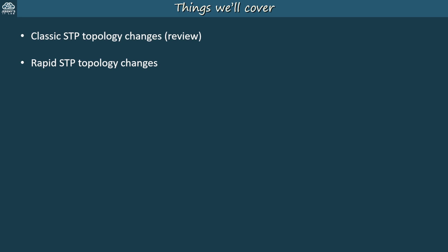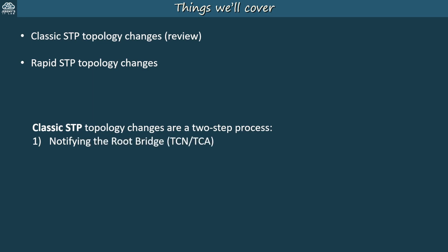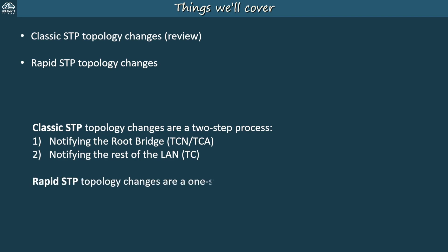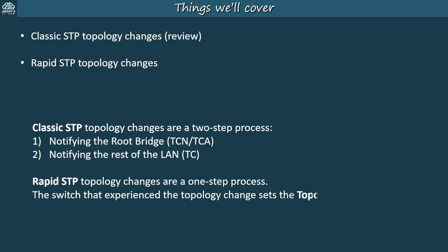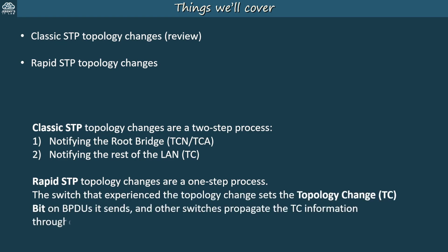Here's a quick summary. Classic STP topology changes are a two-step process, involving notifying the root bridge with TCN and TCA messages, and then notifying the rest of the LAN by setting the TC bit in configuration BPDUs. On the other hand, rapid STP topology changes are a one-step process. The switch that experienced the topology change sets the TC bit on BPDUs it sends, and other switches propagate the TC information throughout the LAN — no need to notify the root bridge first.